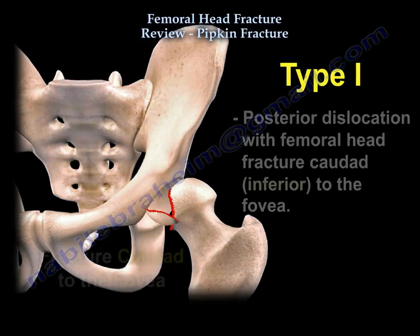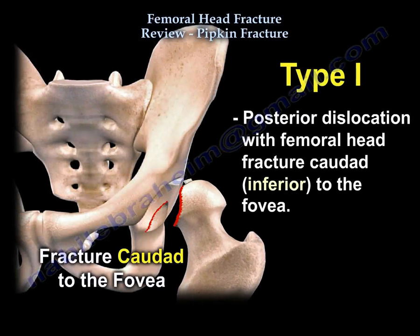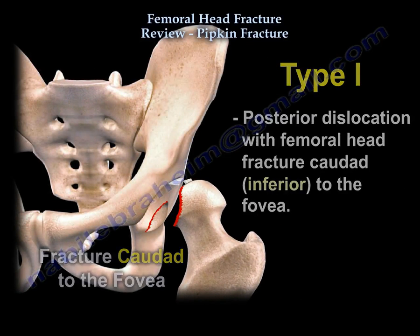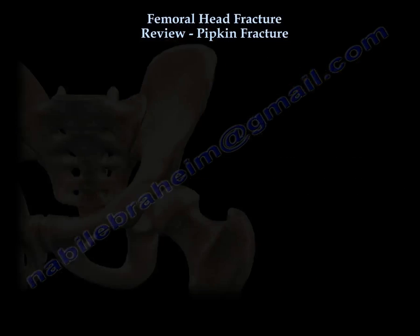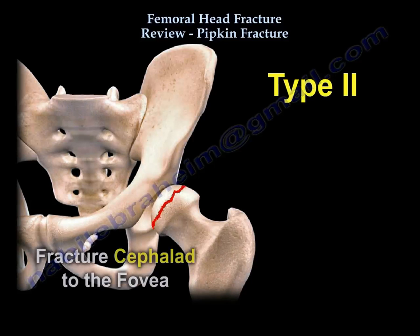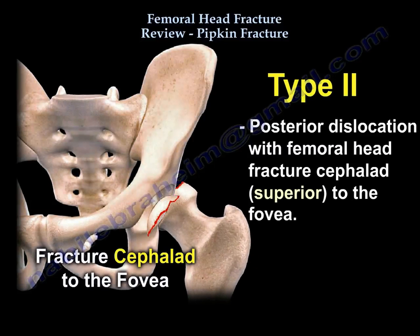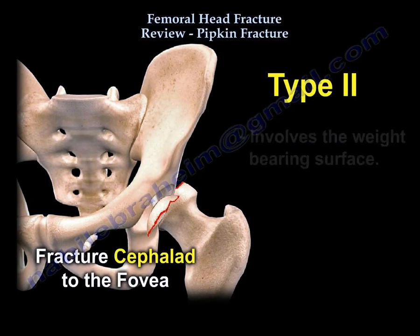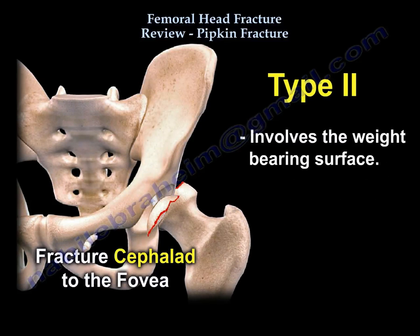Type 1: the fracture is inferior to the fovea. Type 2: the fracture is above the fovea. Type 2 is an important type because it involves the weight-bearing area of the femoral head.